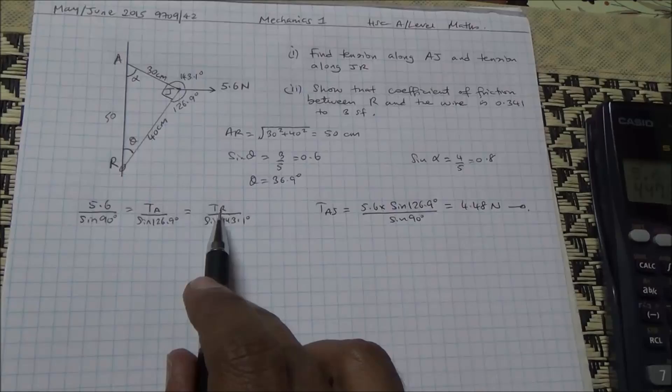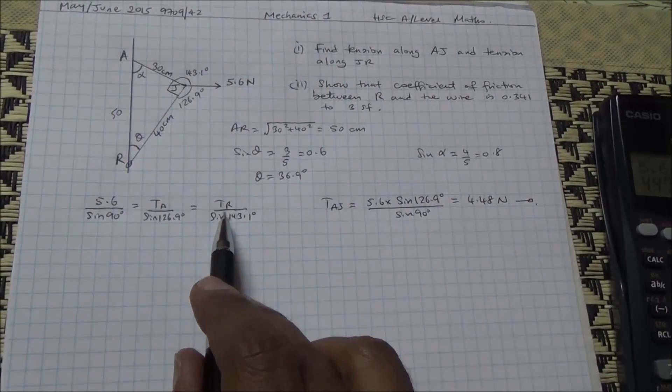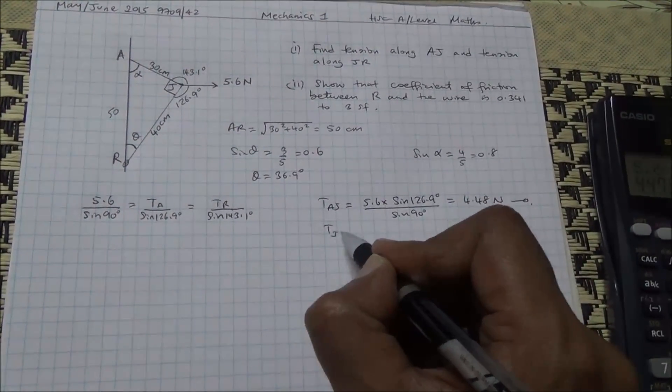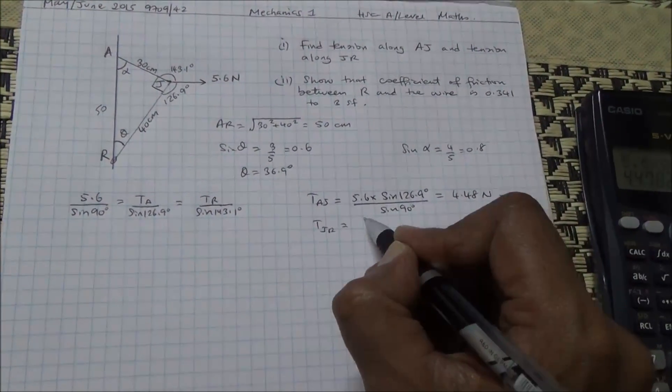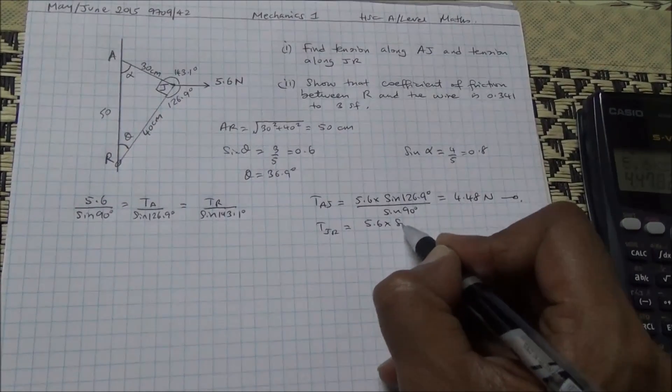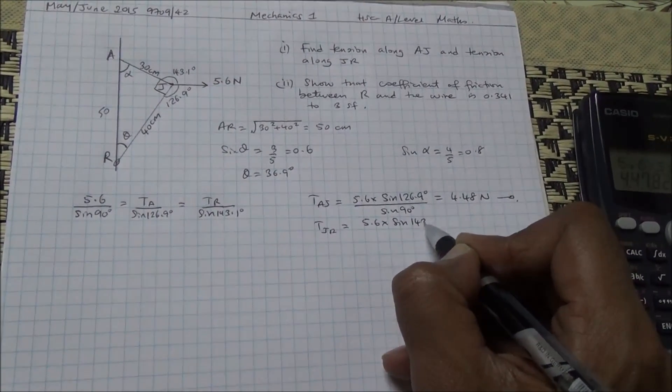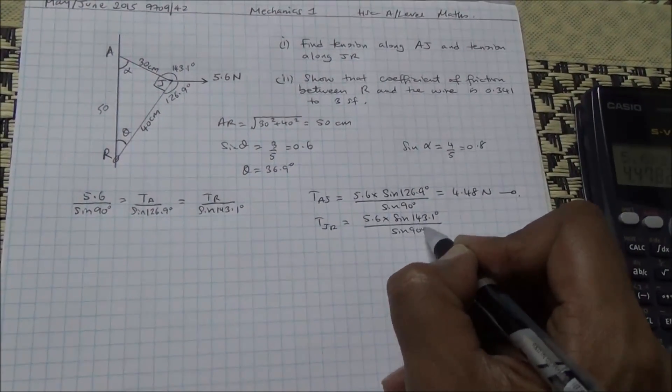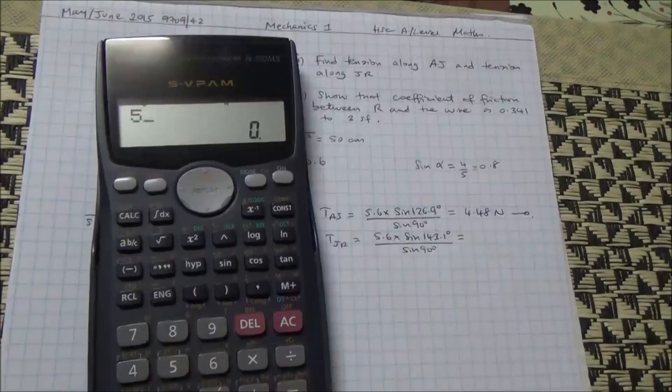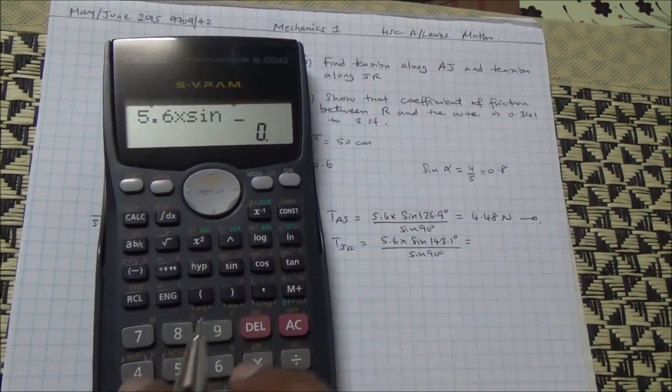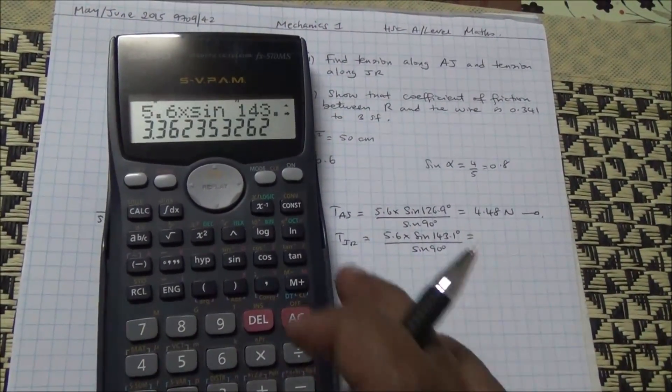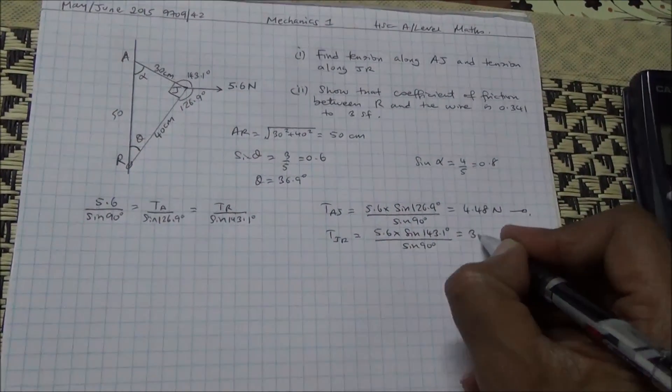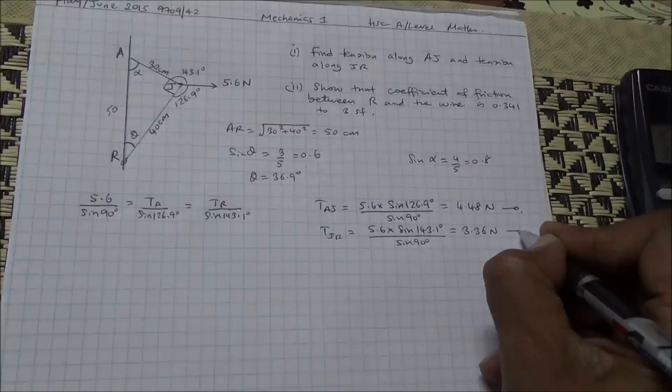Also, we need to find the tension along JR. So cross-multiply this. Therefore, we have tension along JR is going to be 5.6 multiplied by the sine of 143.1 divided by the sine of 90 degrees. And that's going to give us 3.36 Newtons.